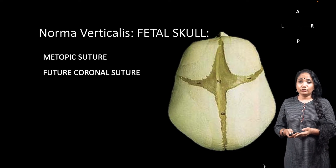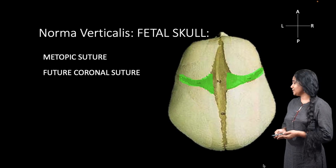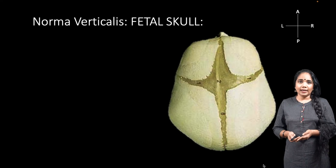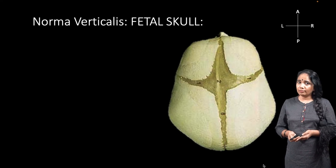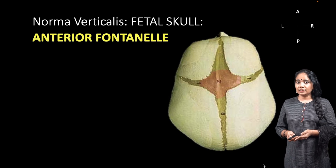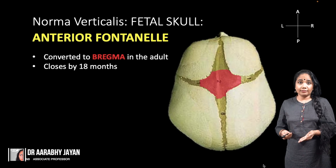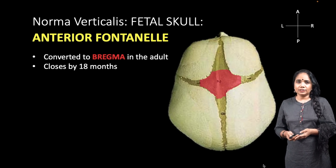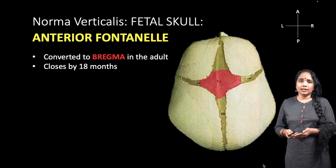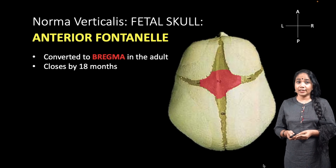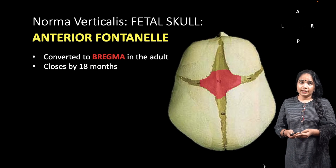We also have the coronal suture between the frontal and parietal bones and the sagittal suture between the two parietal bones. Another important landmark of the fetal skull in the norma verticalis is the anterior fontanelle — the meeting point of the metopic, coronal, and sagittal sutures. It becomes the bregma in the adult. A commonly asked question is when it closes: the anterior fontanelle closes at one and a half years, around 18 months.